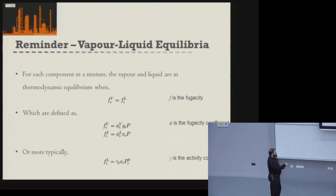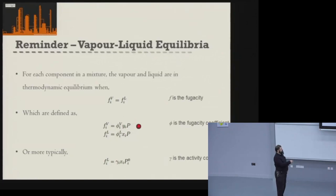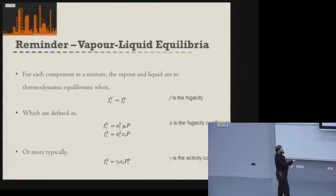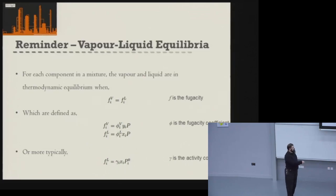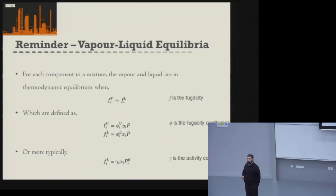We can typically define the fugacity in terms of a fugacity coefficient, the composition of each component, and the total pressure. We can do that for both the vapor and liquid phase. For the liquid phase, we actually often define it instead in terms of an activity coefficient and the saturated vapor pressure of that component.